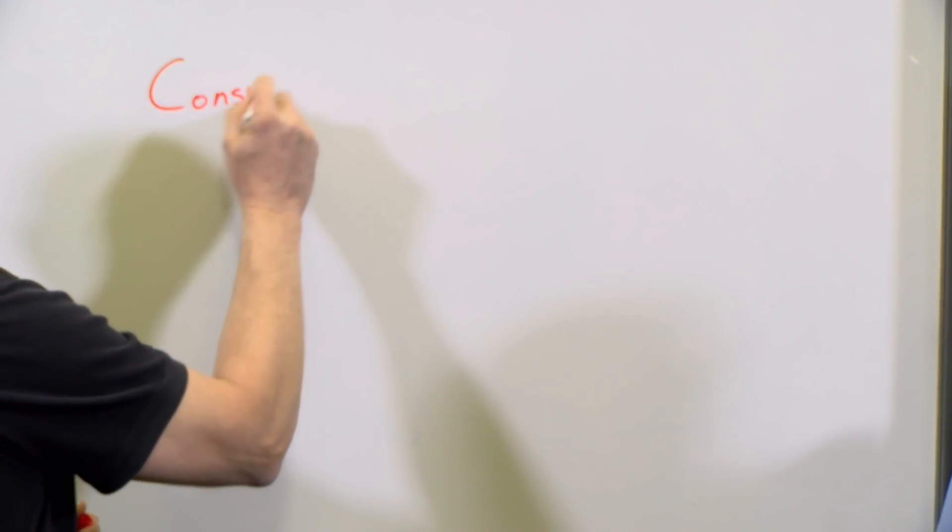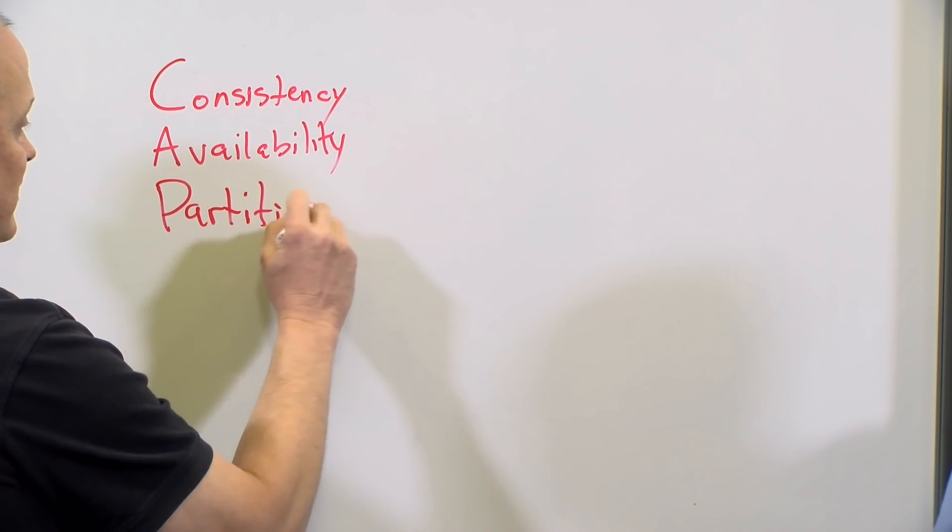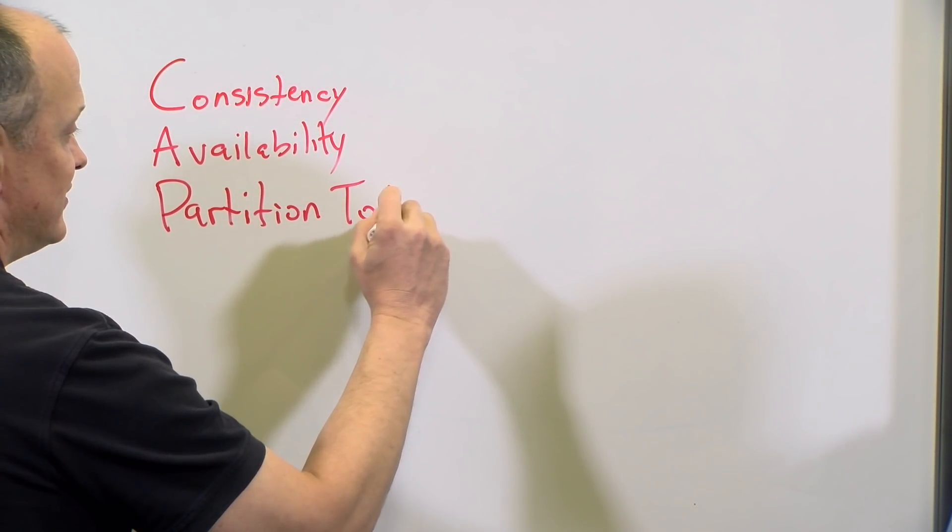The first is consistency — they want to know that when they write something to that storage server, they always get that value. The second is availability. Availability is hard to implement in wide-scale distributed systems, but what it says is if any resource in the storage solution is available, you want to return the data available at that resource. The third is partition tolerance, which tells us that if there's an outage or a failure anywhere in the storage solution, you still want that storage server to be able to read and write data.